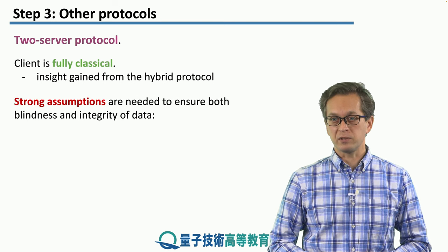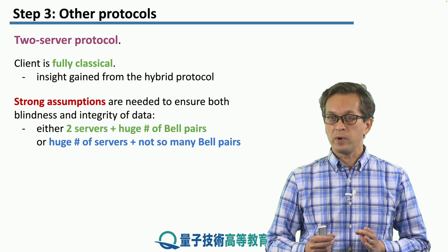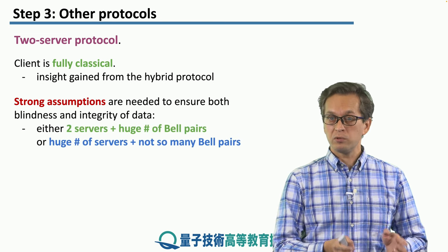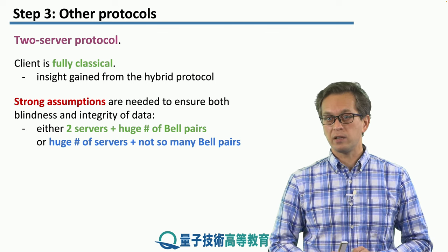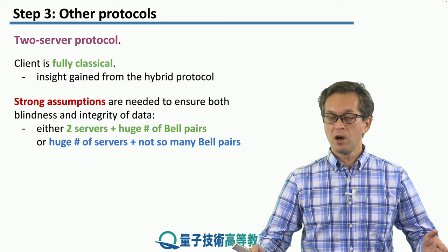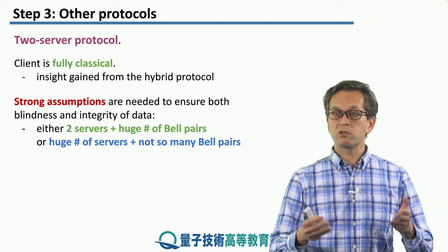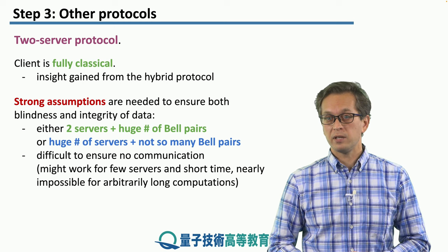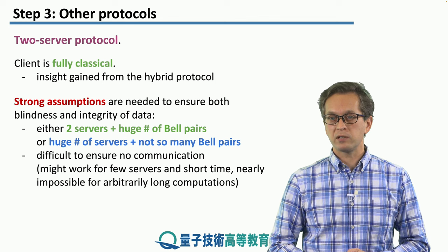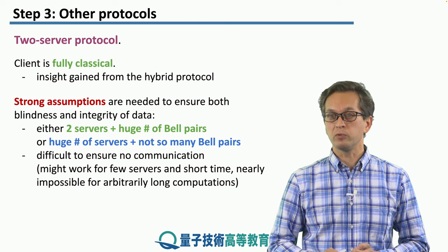There are strong assumptions needed to ensure both blindness and integrity. We can have two servers with a huge number of Bell pairs, incurring large entanglement overhead. Alternatively, reducing Bell pairs requires increasing the number of servers. The non-communication assumption is crucial: this might work for few servers and short times, but it's practically impossible to ensure for arbitrarily long quantum computations.